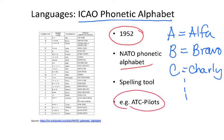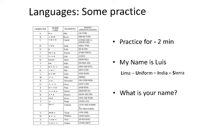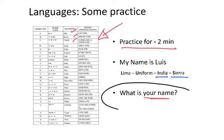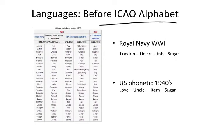If you want to practice the ICAO alphabet, stop this video for two minutes and look at each of the letters. Try to say your name using the alphabet. For example, my name is Luis: Lima, Uniform, India, Sierra. Before the ICAO alphabet was adopted in 1952, other alphabets were used. The British Royal Navy used one in which my name would be London Uncle Ink Sugar. The US alphabet would give Love Uncle Item Sugar.